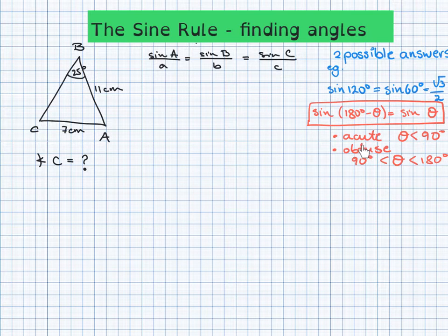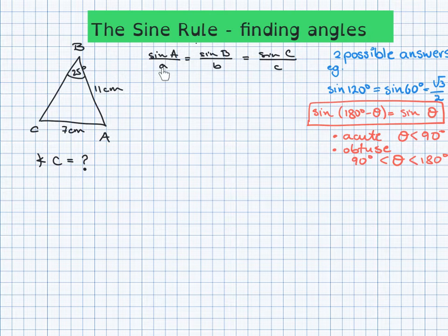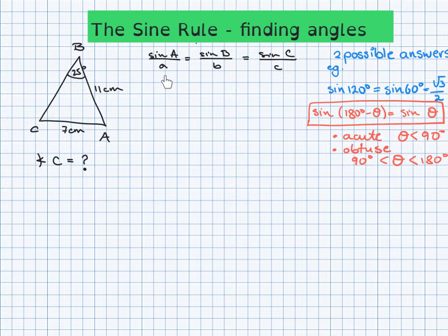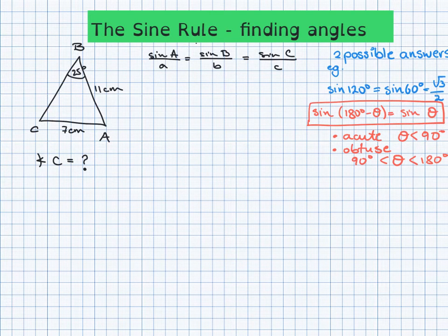Here's the sine rule. The ratio between corresponding sides and the sine of the angles — only two parts of this formula are used at any one time, so there's no need to use all of them.